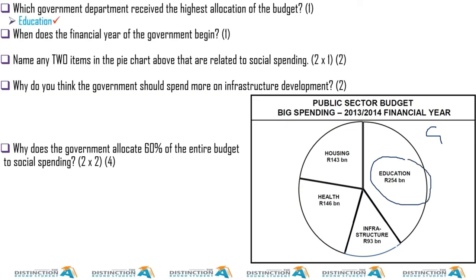That would be Education. When does the financial year of the government begin? That is the first of April — I've been saying this over and over again. Name any two items in the pie chart above that are related to social spending. Almost everything here, except for infrastructure.